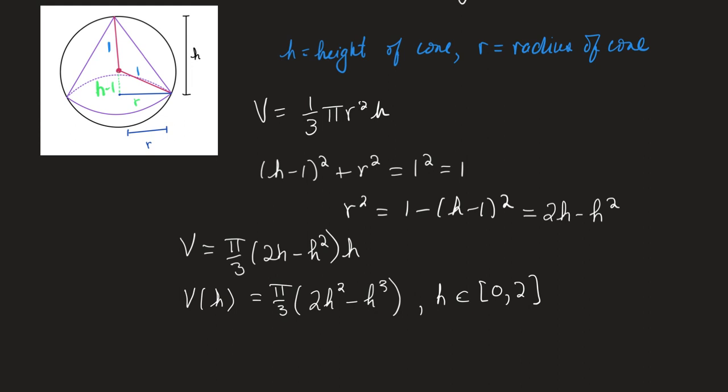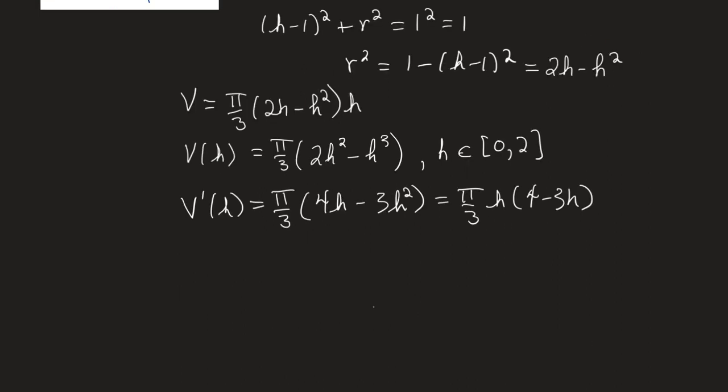So let's go ahead and differentiate. I have V'(h) = π/3 times (4h - 3h²). That's π/3 times h times (4 - 3h). Setting that equal to 0, I get that my critical numbers are h = 0 and when 4 - 3h = 0, so that's when h = 4/3.